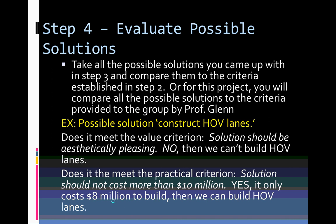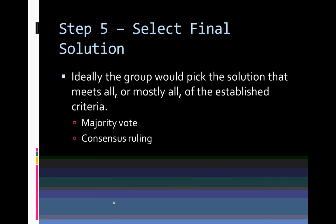That leads us to step five. After you test each possible idea against the criteria, ideally the group picks the solution that meets all — or mostly all — of the pre-established criteria. You can do this either by a majority vote, where the solution with the most votes wins, or by a consensus ruling where the final decision has to have everyone's approval — kind of like a jury, where everyone has to agree on innocent or guilty. The good side of consensus is that you have everybody on board; the bad thing is that it can take a really long time.